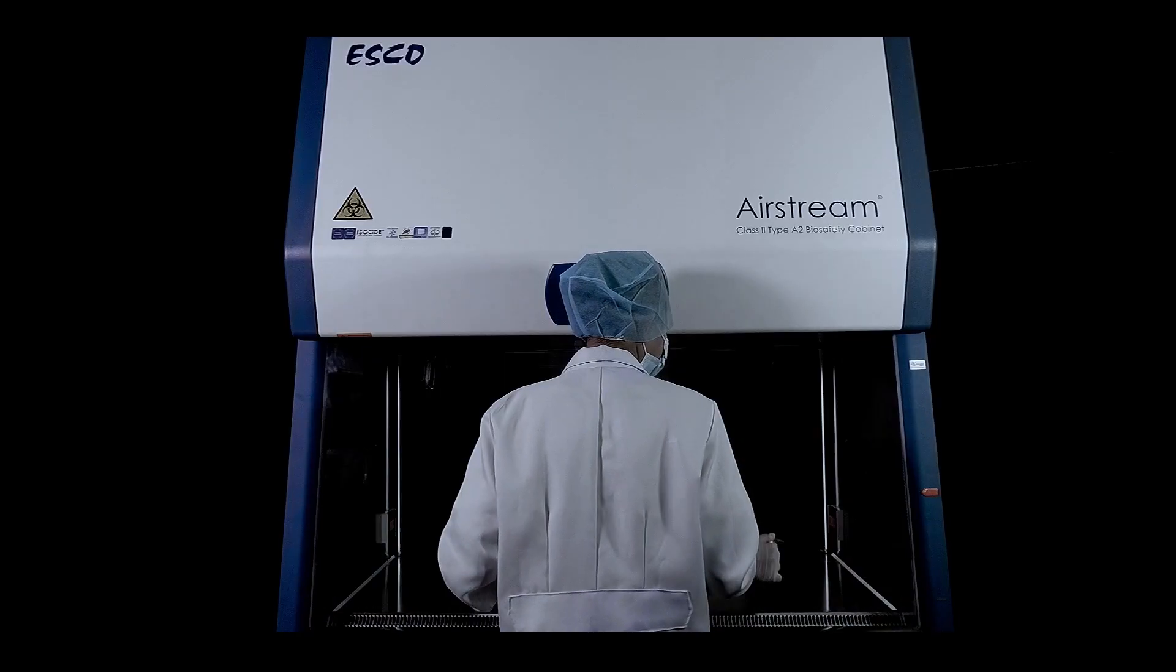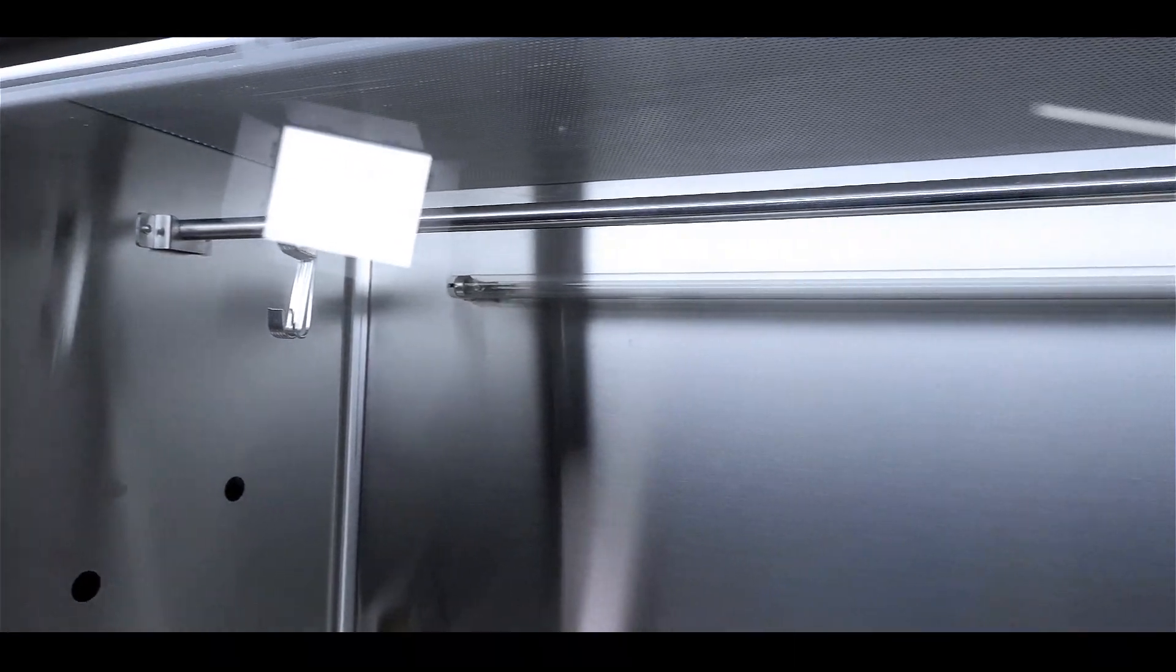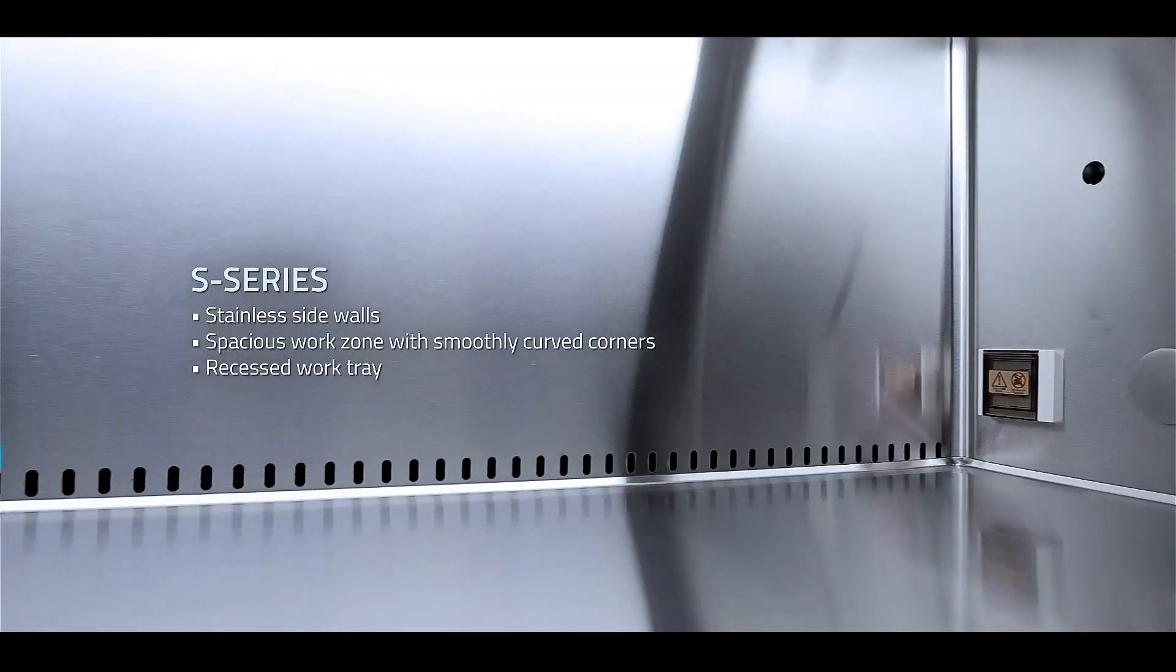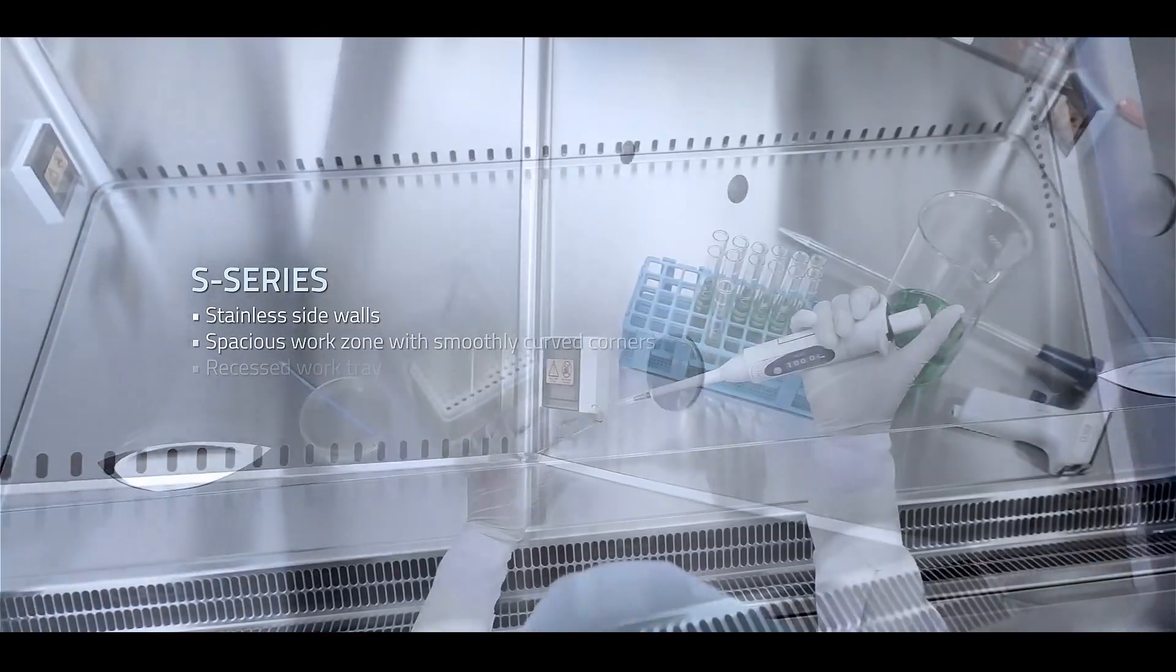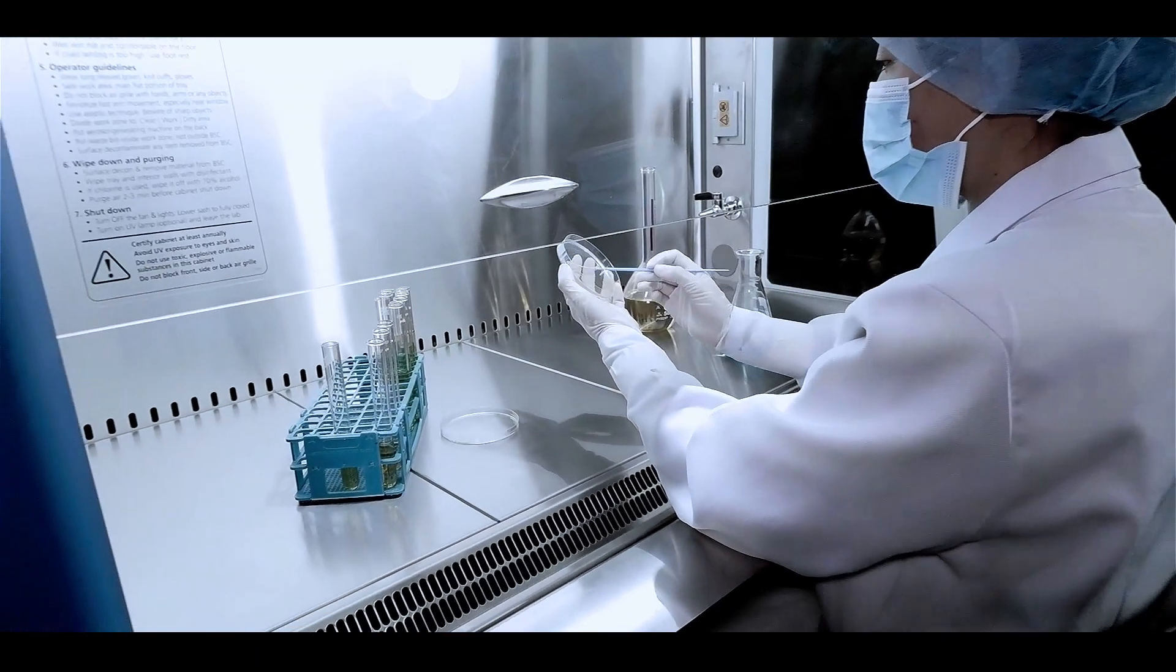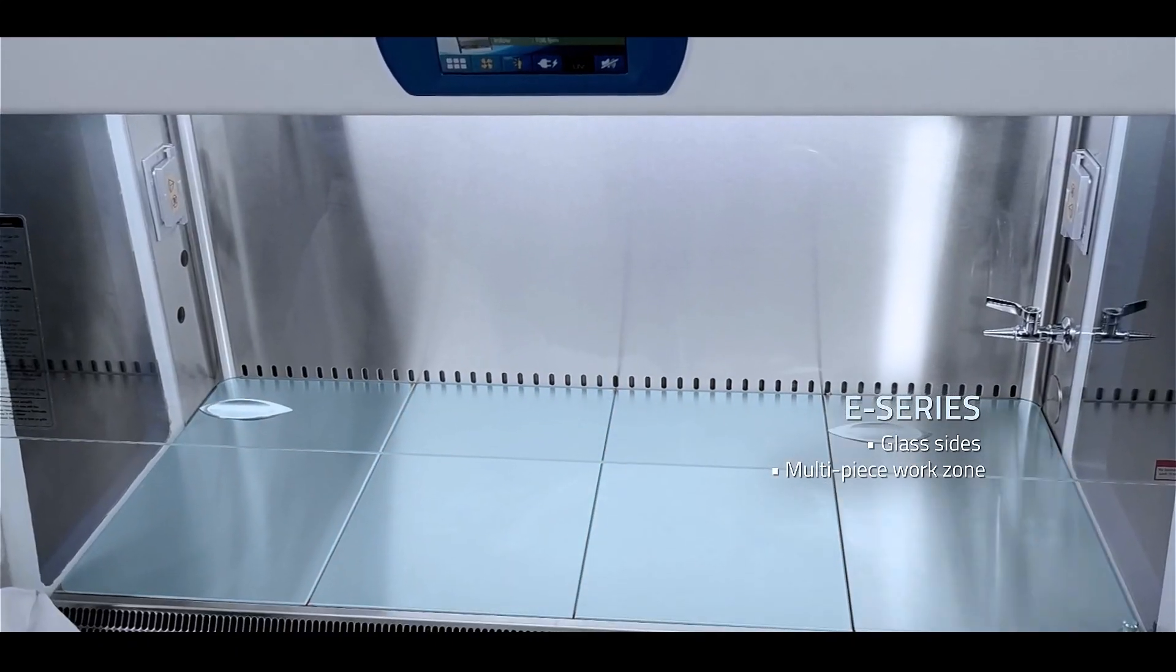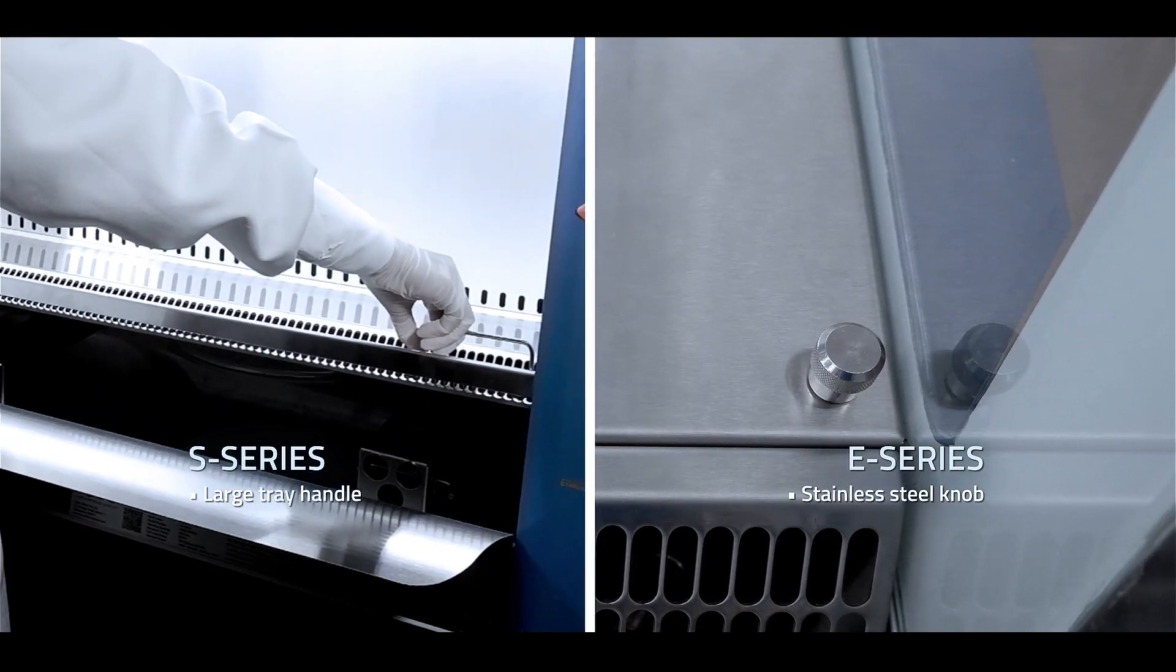Ergonomics taken to the next level with expanded choices. AC2NS G4 in S-Series boasts stainless steel side walls, a spacious work zone with smoothly curved corners or recessed spill tray and a user-friendly sloped perimeter for hassle-free cleaning. Or opt for the E-Series for a touch of elegance featuring glass sides and a multi-piece work zone designed for convenience.